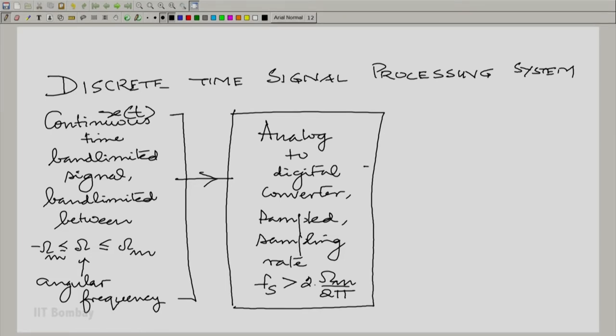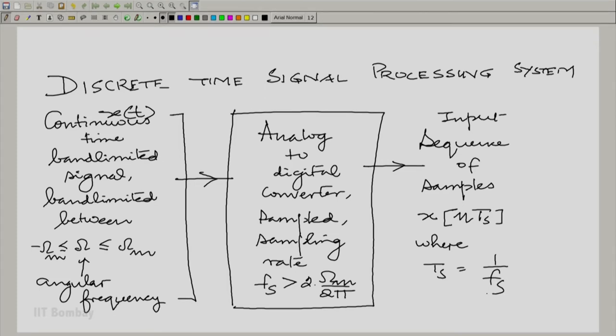Suppose this continuous time band limited signal is called small x of t. Then what we generate here is a sequence of samples or an input sequence, and we put square brackets here. So we have x square bracket n t s where t s is 1 by f s. And instead of keeping on writing x square bracket n t s, we will just write x square bracket n.